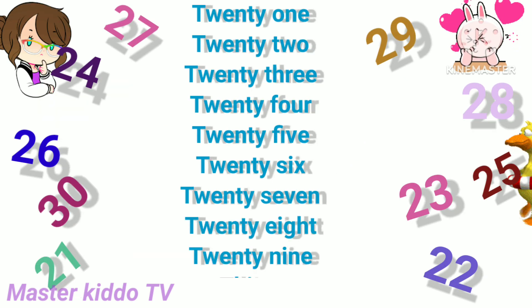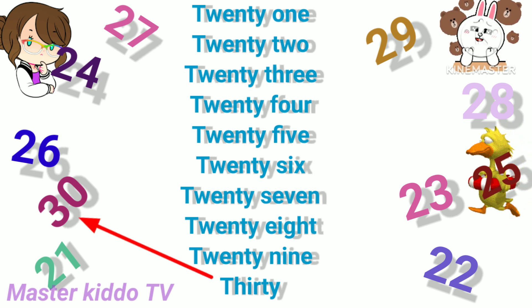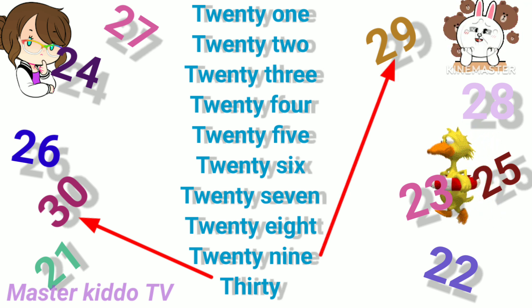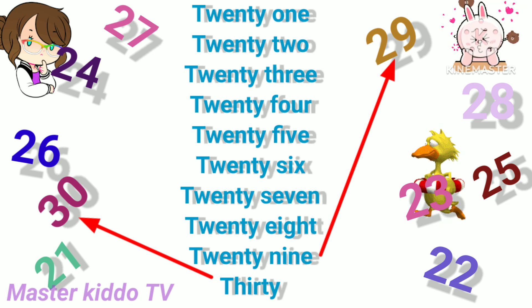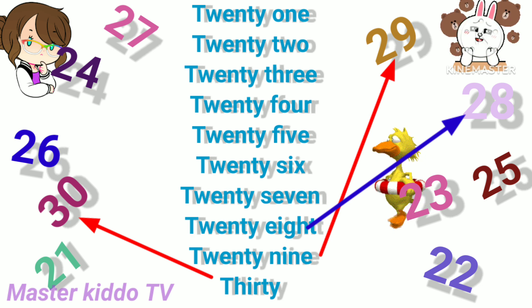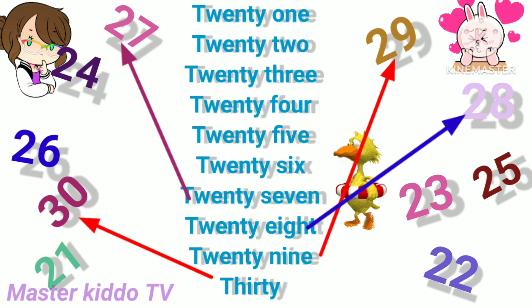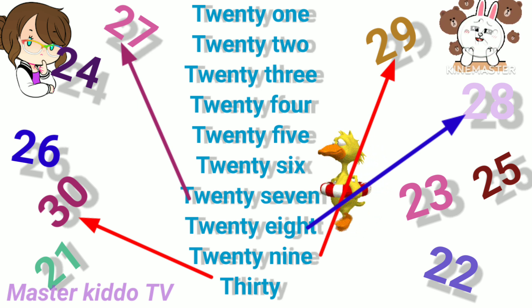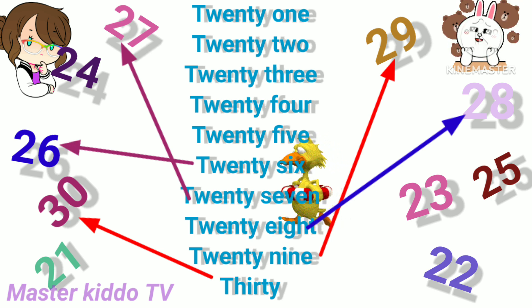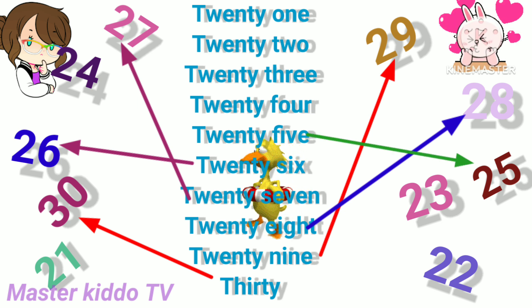Next, now we match 21 to 30 with numbers. 30. Next is 29. Good. 28. Here is 27, 27. 26, 26. 25. Good job.